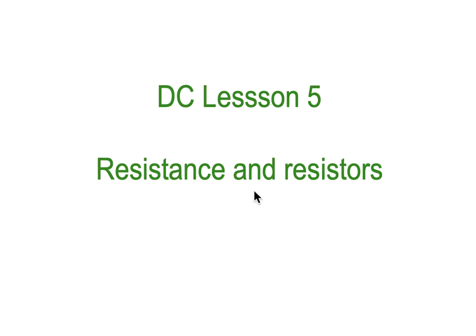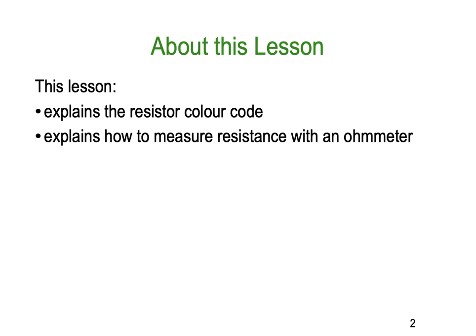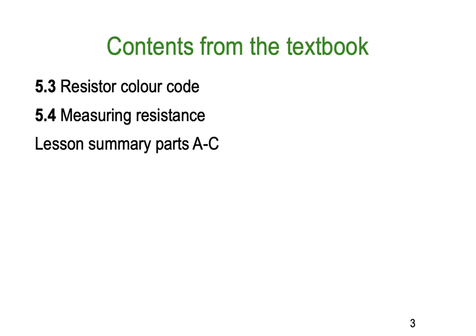Hello, I'm Dr. Ken here with you again. This is DC Lesson 5, Part C, with Resistance and Resistors. In this lesson, we're going to explain the resistor colour code, how to measure resistance with an ohmmeter, and at the very end we're going to do a summary. The contents from the textbook, if you're following along, are sections 5.3 and 5.4.